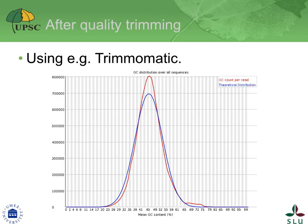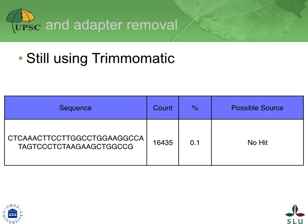Back to our example: we have seen that Trimmomatic helped correct some of the observed bias. However, it did not affect the putative anomaly observed in the GC distribution. Neither did it remove the unknown sequence. It did, however, succeed in removing the adapters. How should we go about the unknown sequence? Take a minute to think about how you would approach it.